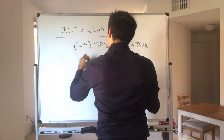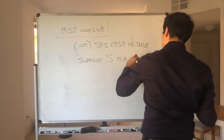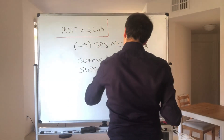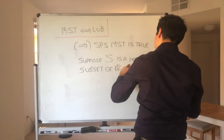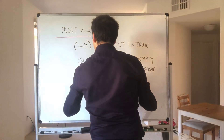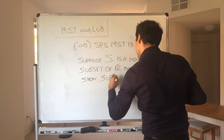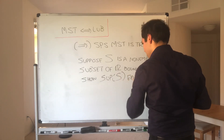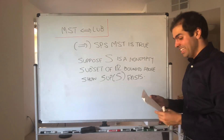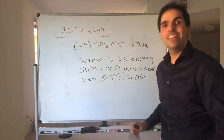So suppose that S is a non-empty subset of ℝ that is bounded above. What we want to show is that the supremum of S exists. Here's what we'll do: we will show this by constructing a very important sequence, and we'll do this recursively, meaning we define the first term and then given Sn we define the next term.